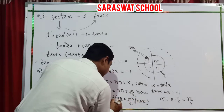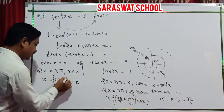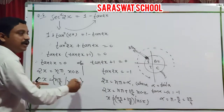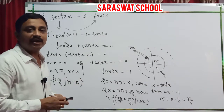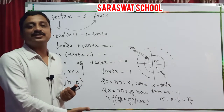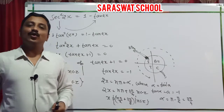Both answers in union form: x equals n pi by 2, n belongs to Z, union x equals n pi by 2 plus 3 pi by 8, n belongs to Z. The answer is done easily and happily.